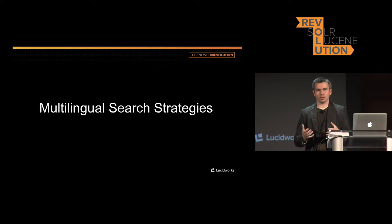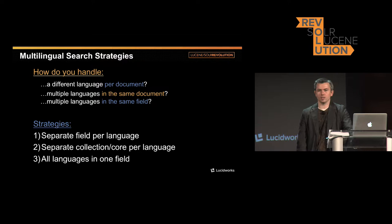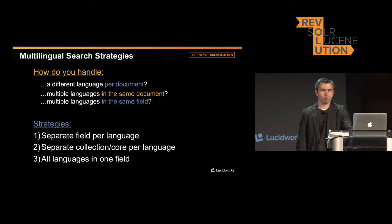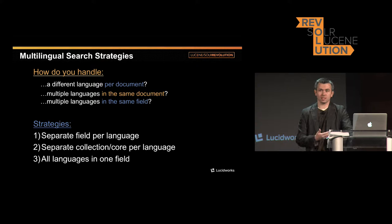Now let's get into how you handle multilingual content. What happens if every document has a different language, or you have multiple languages within the same document or field? There are three strategies: first, a separate field for every language — the most common; second, a separate collection for every language — the least common; and third, putting all languages in a single field with per-language analyzers.